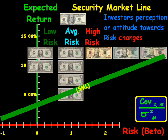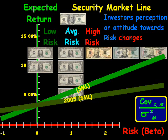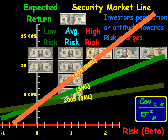The second factor that changes the SML is investors' perception or attitude toward risk, and what this does is change the slope of the SML. For example, in 2005, investors were bidding up prices of securities, which drove the expected return or yield of those securities down, producing a flatter slope. Conversely, in 2008, investors had to unwind illiquid positions and dump securities to meet margin calls. Most banks didn't want to take any risk, and investors who did demanded a really high premium for the risk being taken.